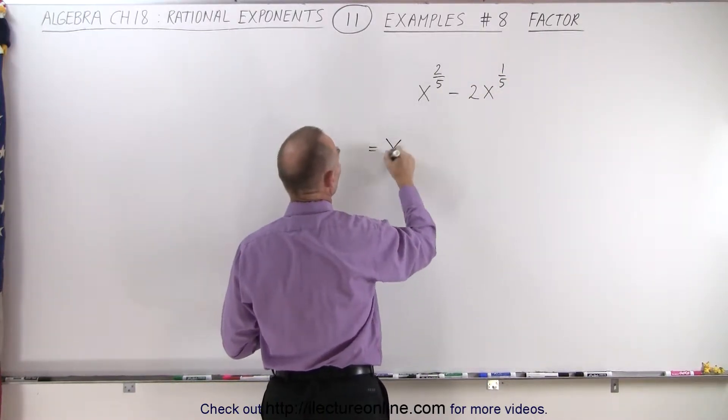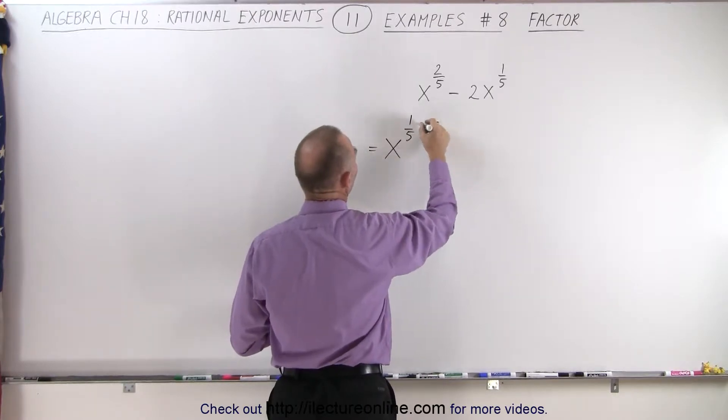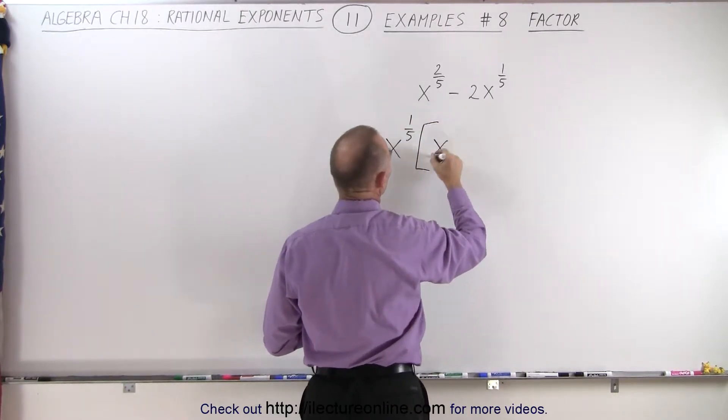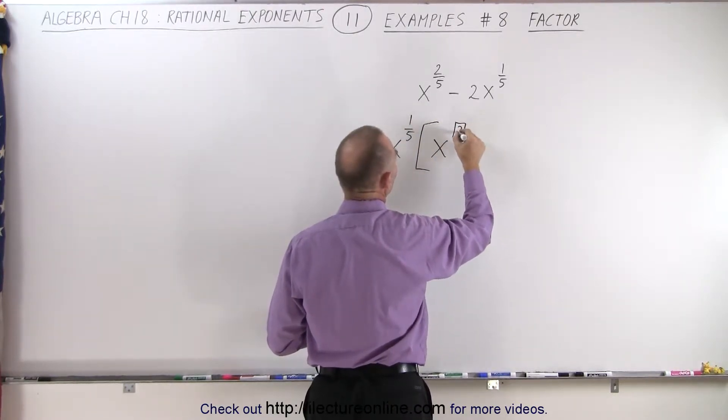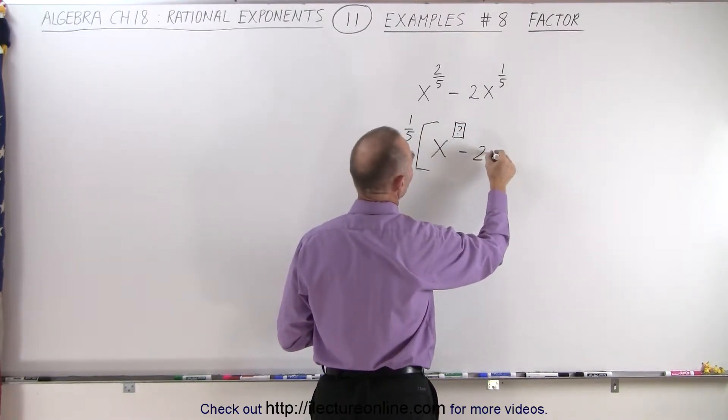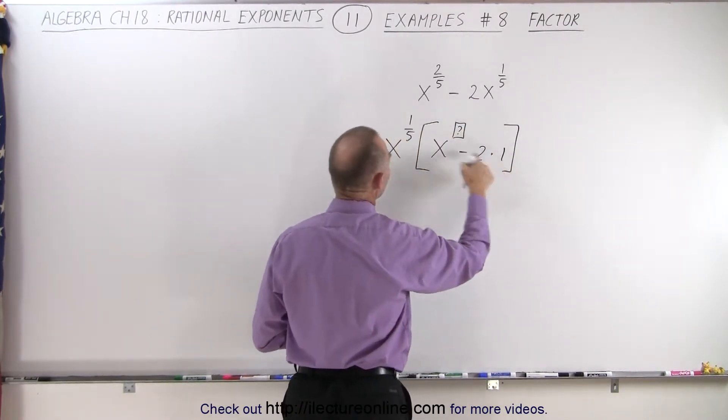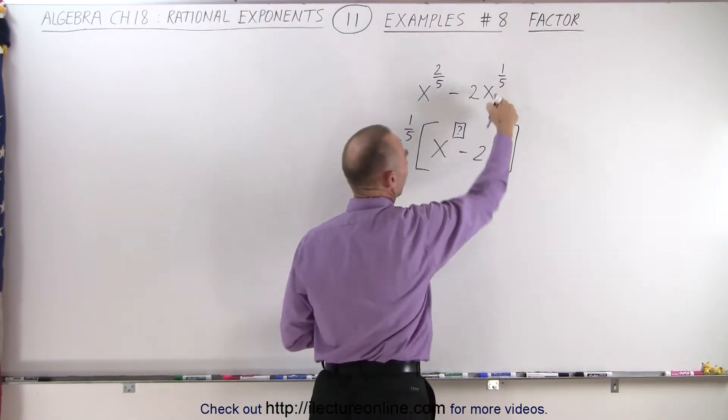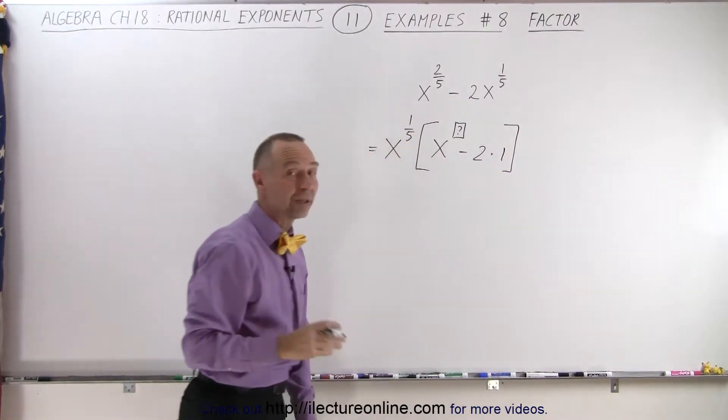So this is equal to x to the 1 fifth times we have x to some new exponent. We're trying to figure out what that new exponent is. Minus 2 times 1. Notice that 1 times x to the 1 fifth gives us back x to the 1 fifth. But what is that new exponent?